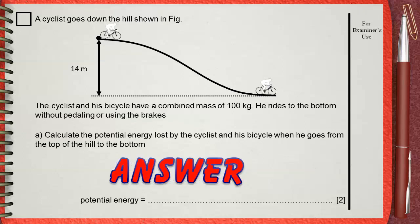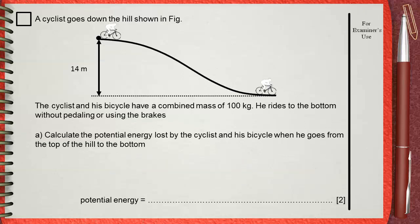Let's collect our givens. We have 100 kilograms, which is the mass m. We also have 14 meters, which is the height h. He is asking for the potential energy. The formula that links these three quantities is: potential energy equals m times g times h.